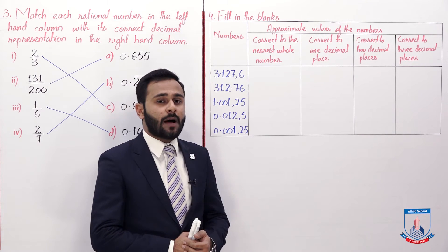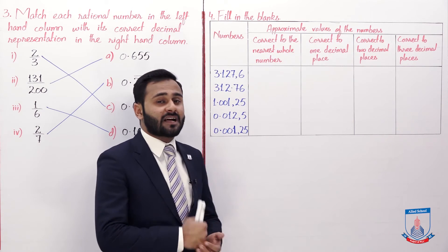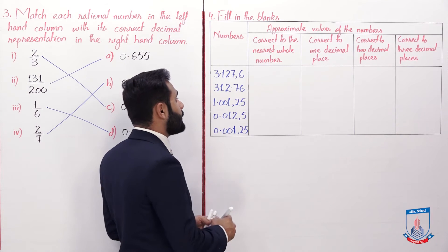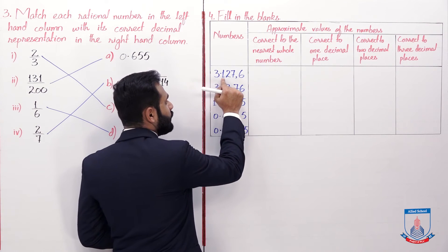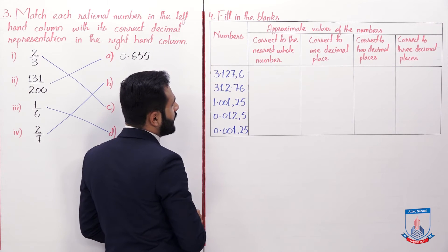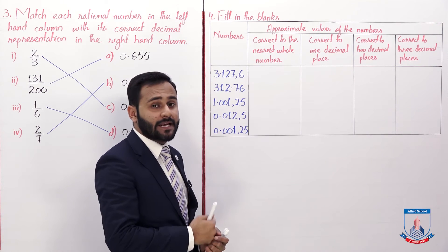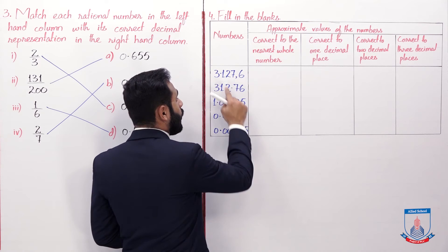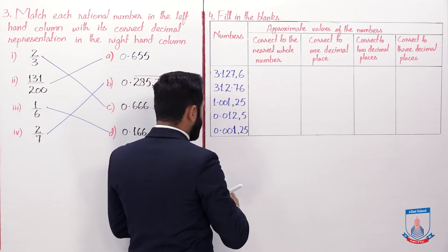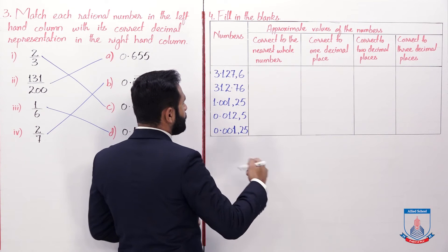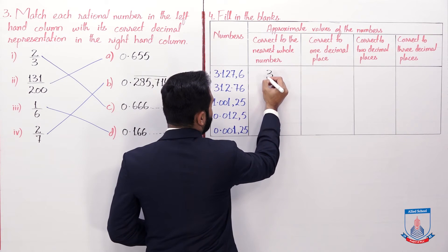The first number is 3.1276. For the nearest whole number, observe the first digit after the decimal — it is 1, which is less than 5 — so the answer is 3. For one decimal place, observe the next digit — it is less than 5 — so it is 3.1.